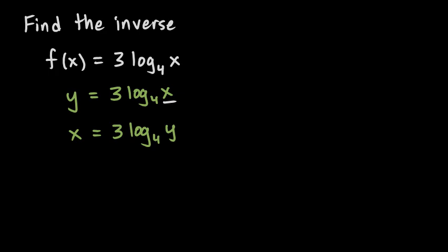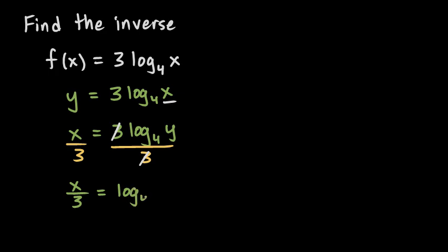To solve this for y, we just use ordinary algebra. The first step is pretty simple: we divide by 3 on both sides. The 3s cancel, and that leaves us with x over 3 on the left, and on the right we have the log base 4 of y.